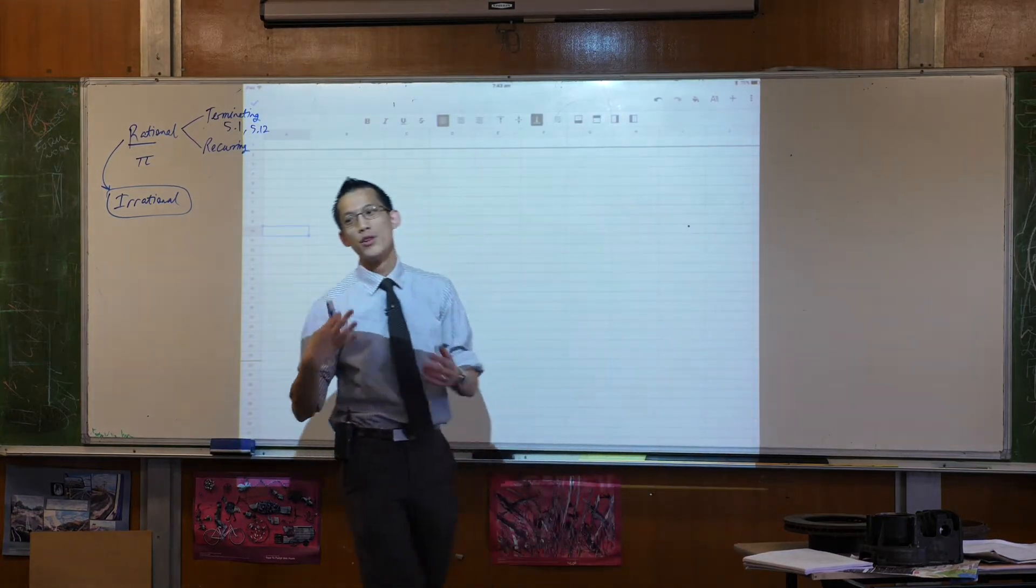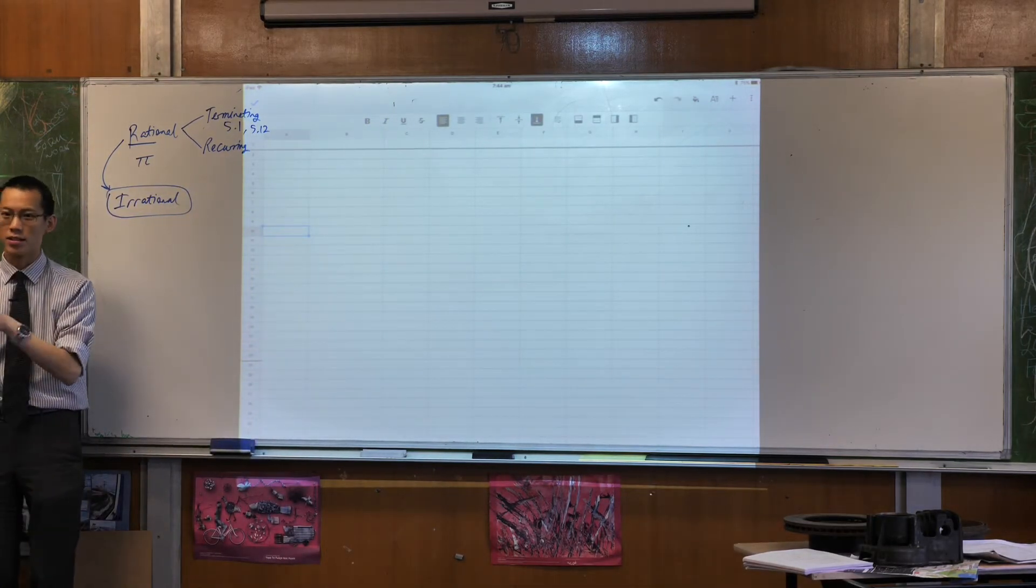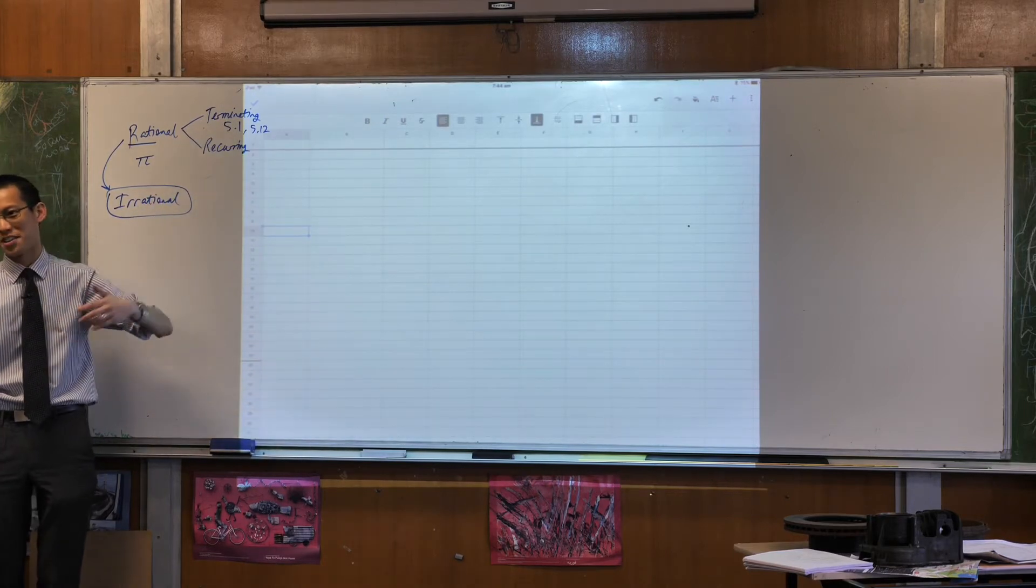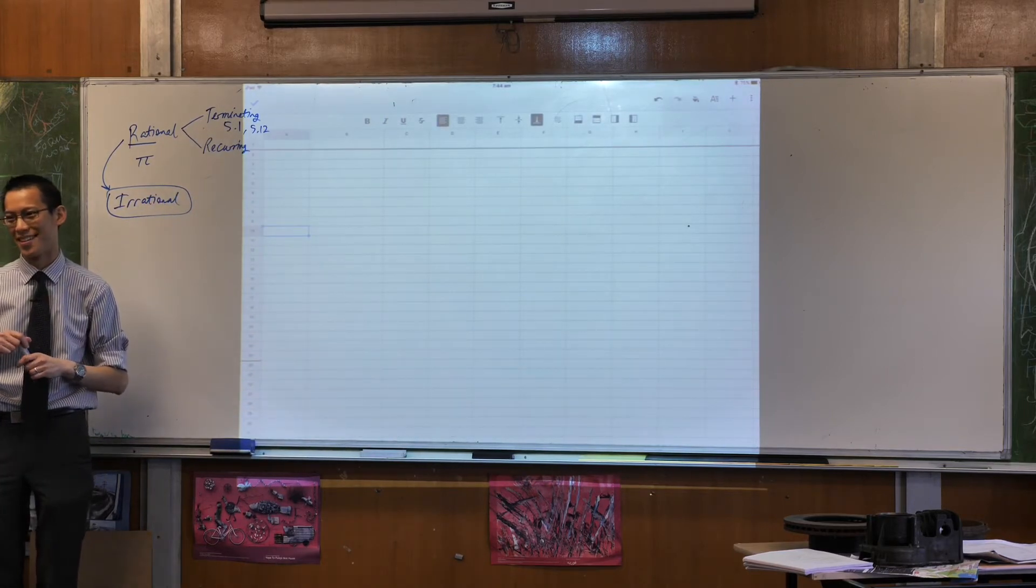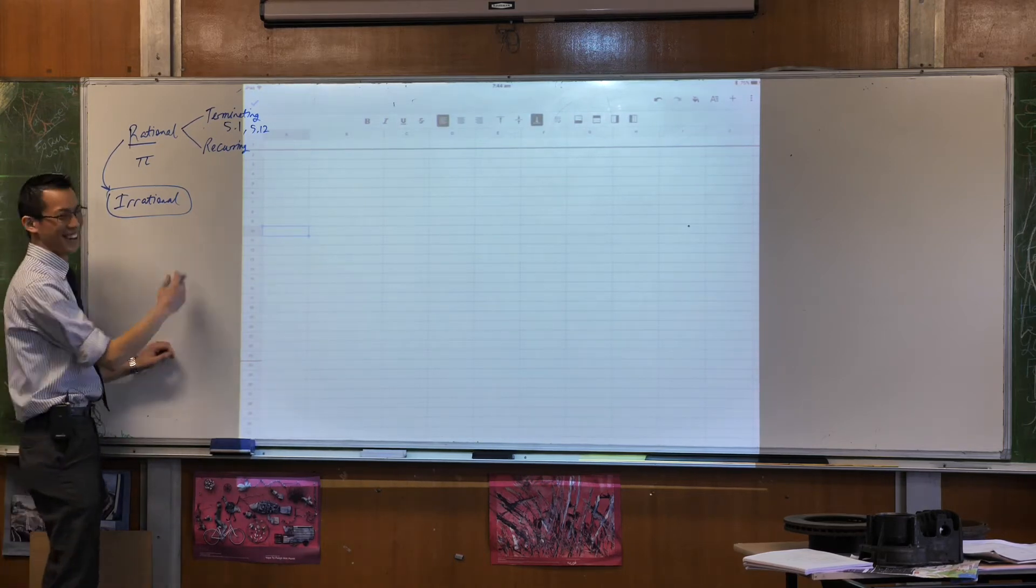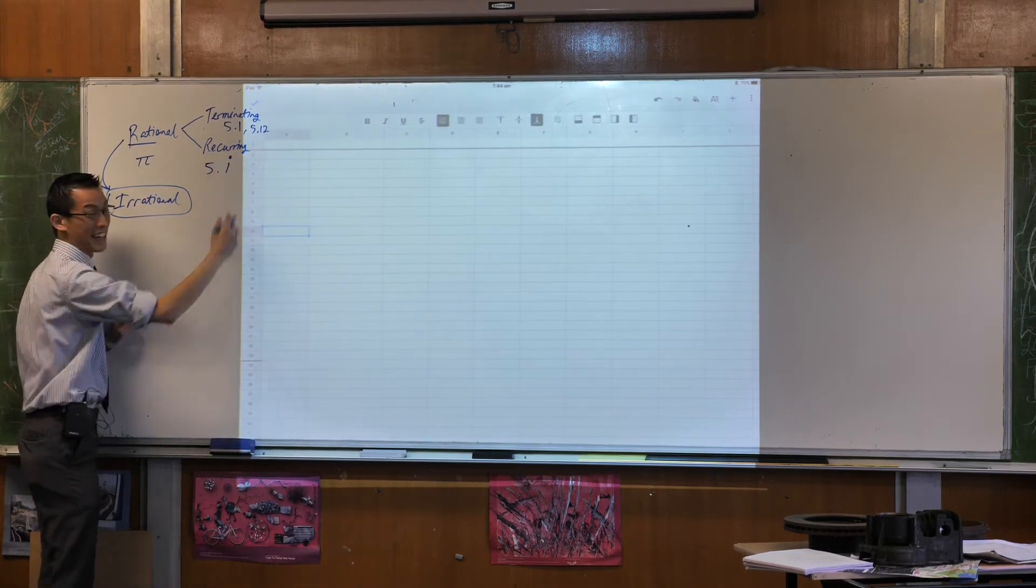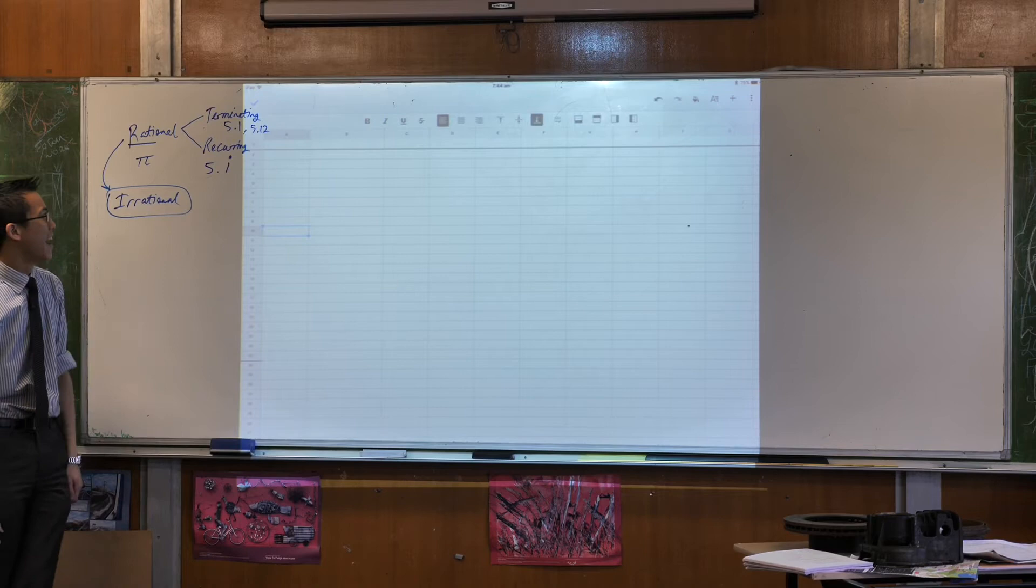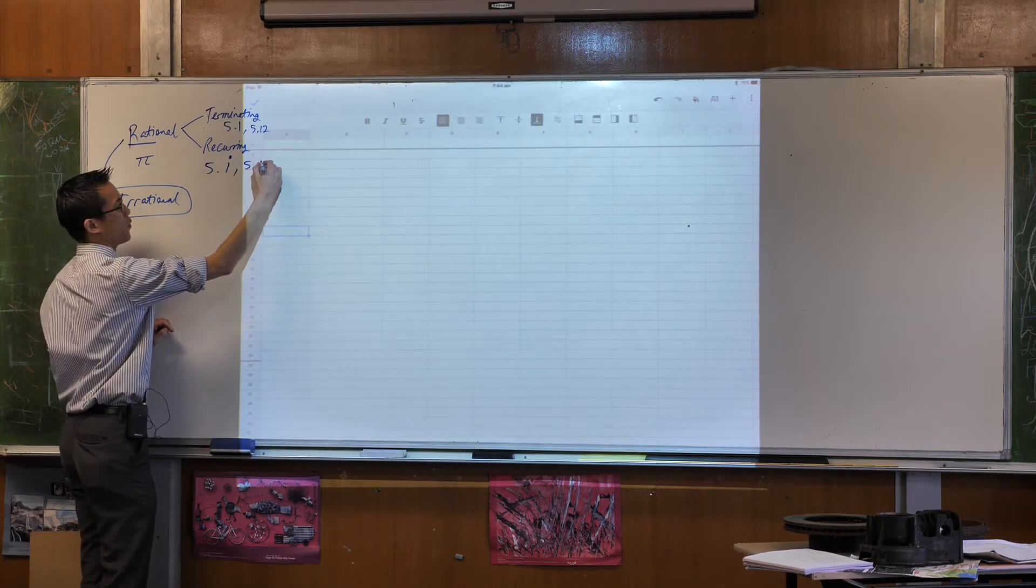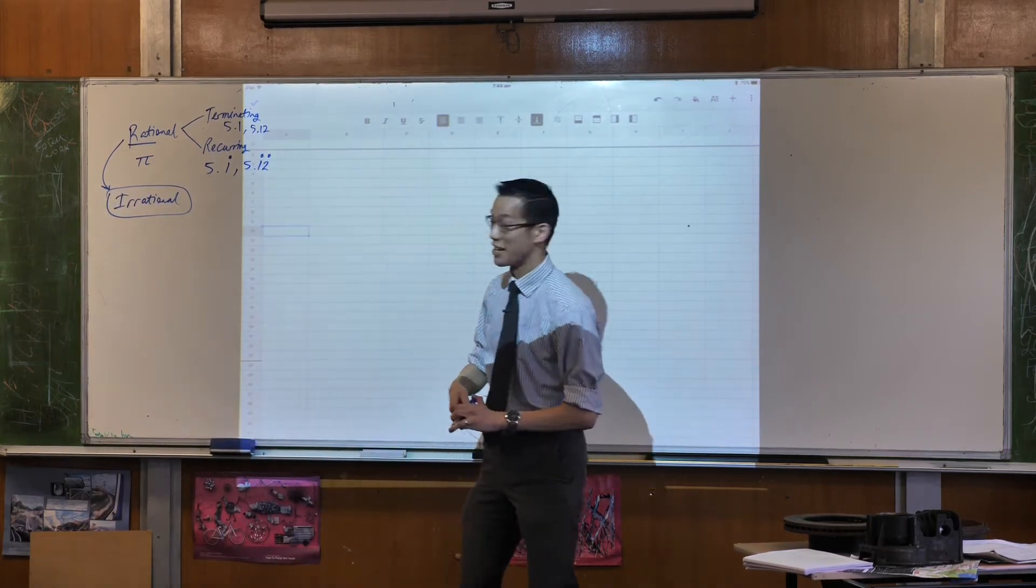But we also know that not all decimals, not all rational numbers that you write as decimals stop. Some of them go on and on and on forever. They're recurring. So, give me an example of a recurring decimal. Yeah, of course. Alright, 5.1 repeater. 5.111111. And don't tell me, I will give you the next one. 5.1212121212. Okay. What is your obsession with these numbers? Anyway, okay.